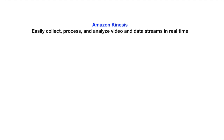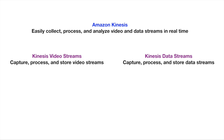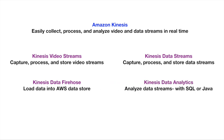Amazon Kinesis is a collection of services which help us to easily collect, process, and analyze video and data streams in real time. Amazon Kinesis currently offers four kinds of services: Kinesis Video Streams, which captures, processes, and stores video streams; Kinesis Data Streams, which captures, processes, and stores data streams; Kinesis Data Firehose, which loads data into AWS data stores; and Kinesis Data Analytics, which analyzes data streams with SQL or Java.